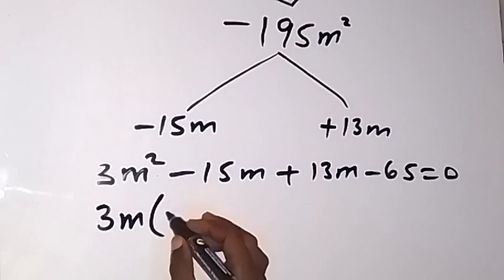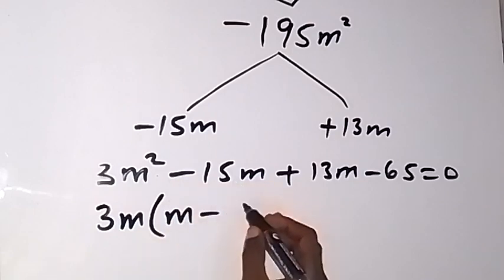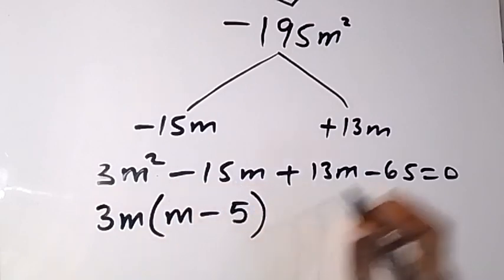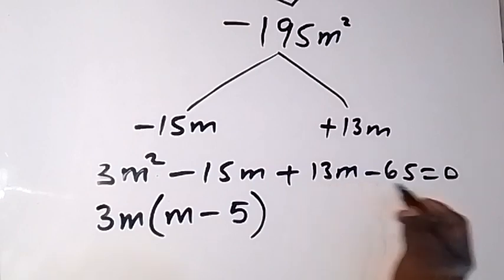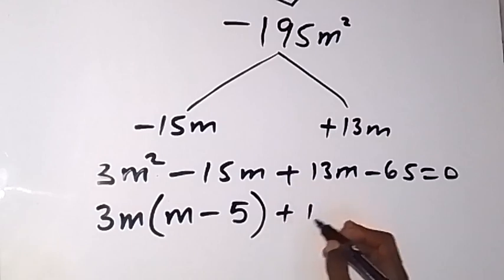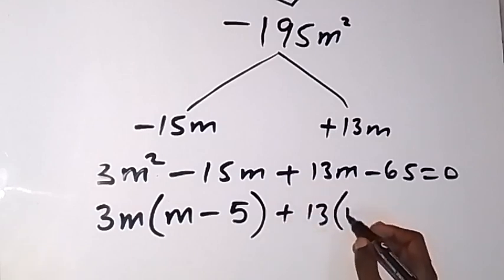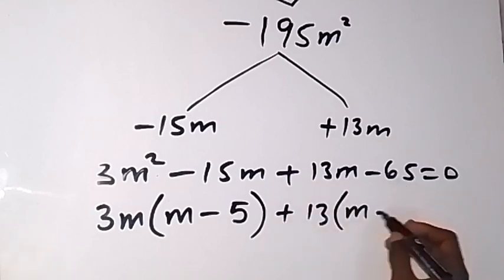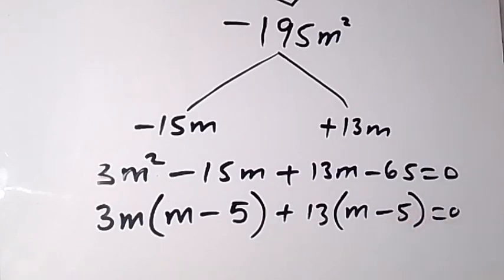So when you factor 3m out we have 3m(m - 5). And on this side as well, you factor what is common out, you have just +13 common, so +13(m - 5).